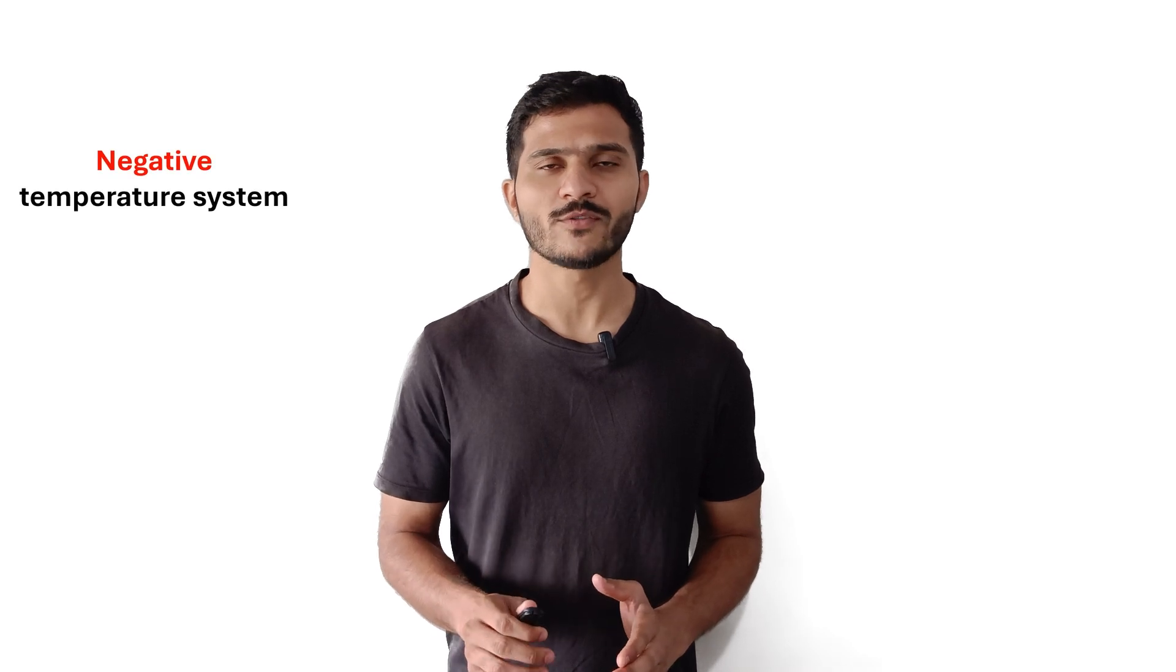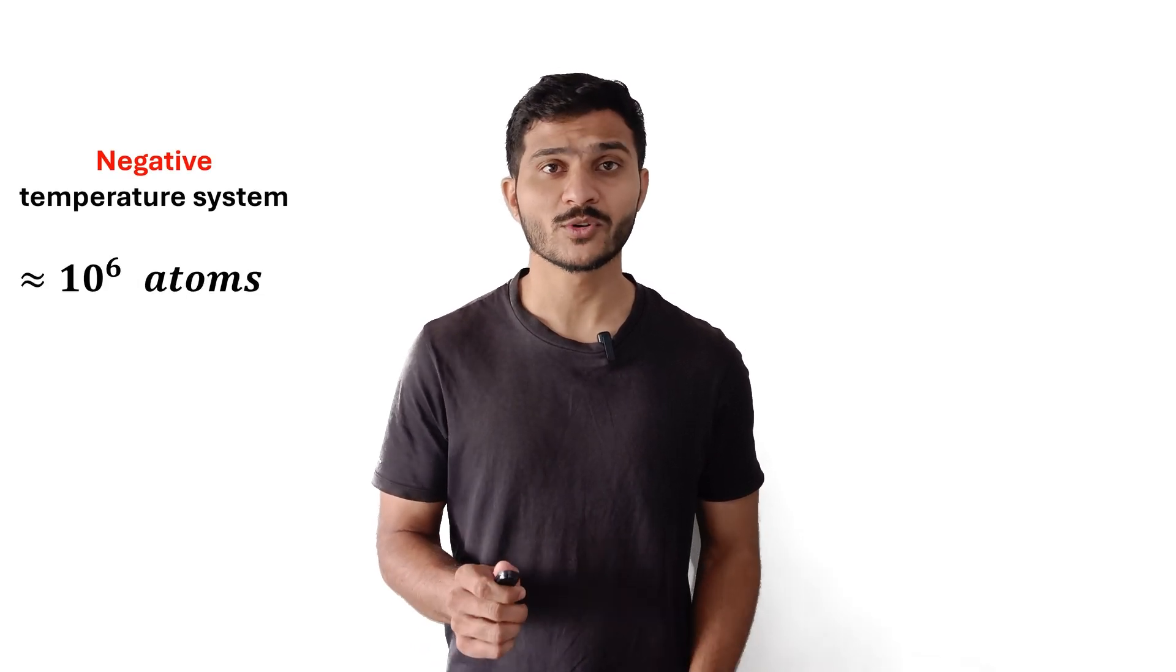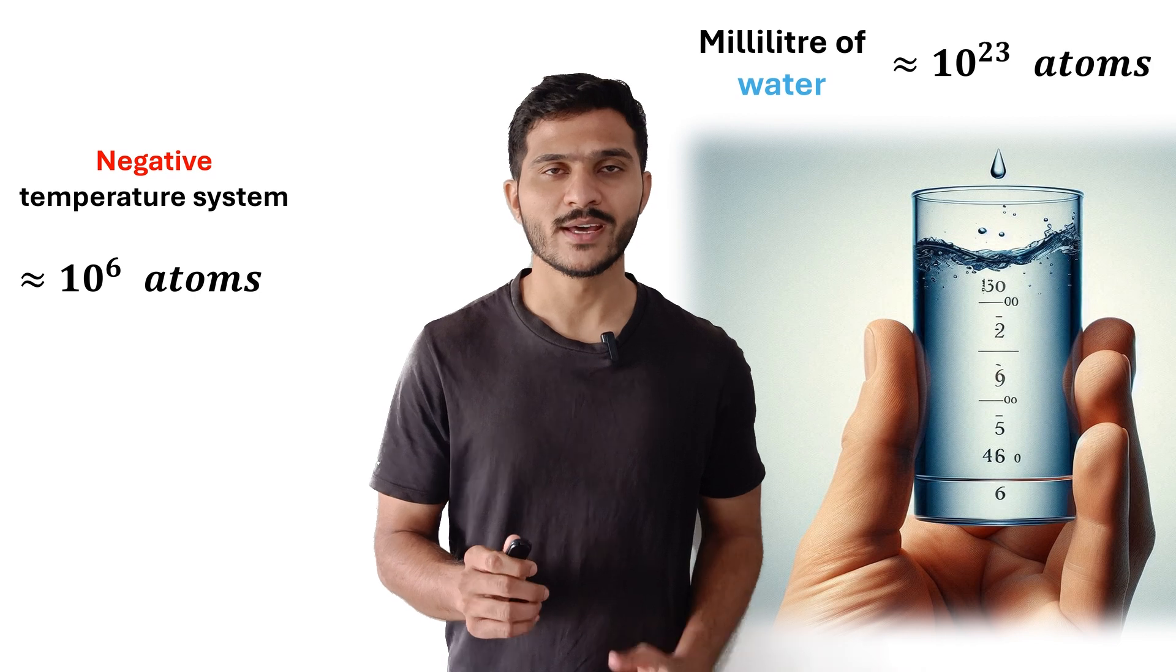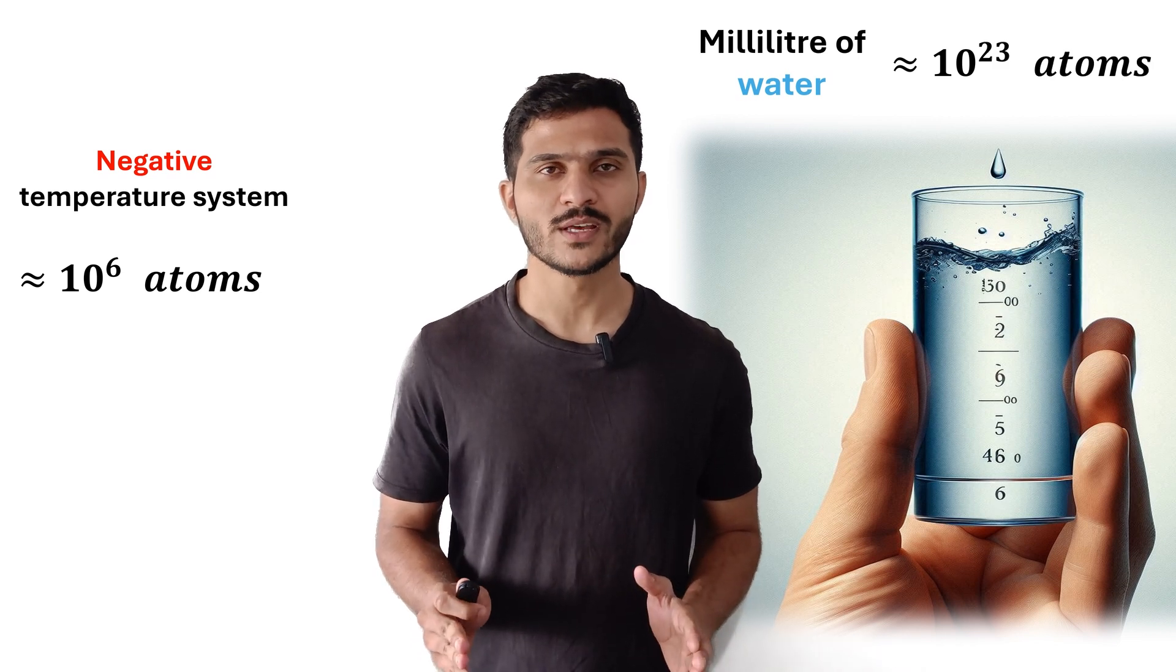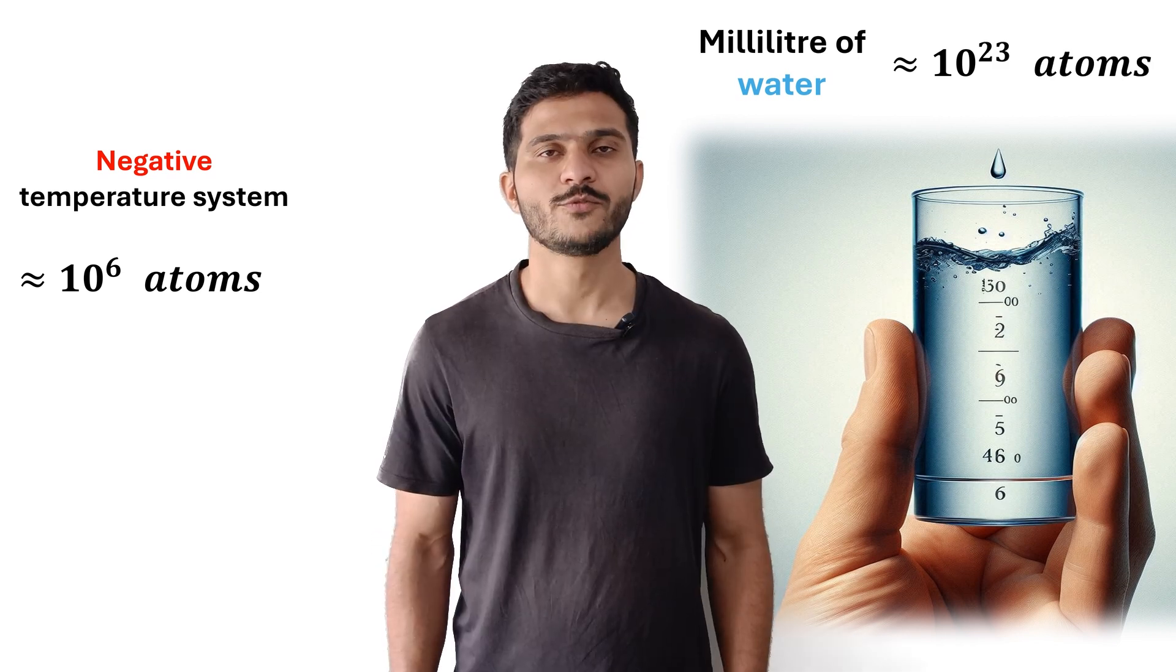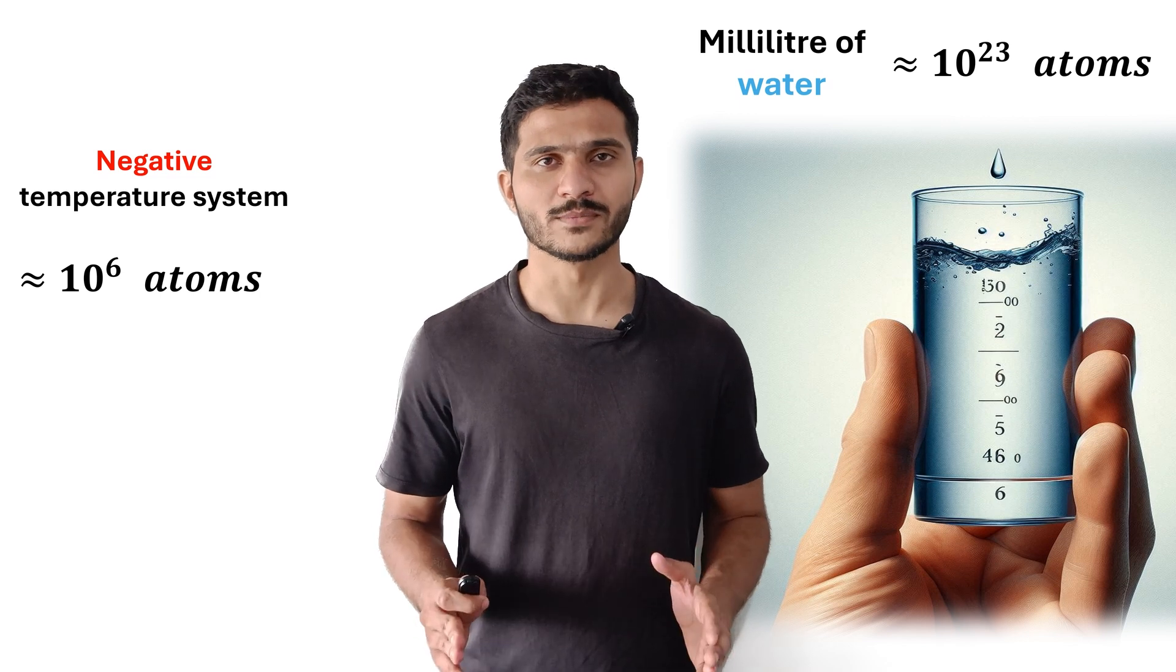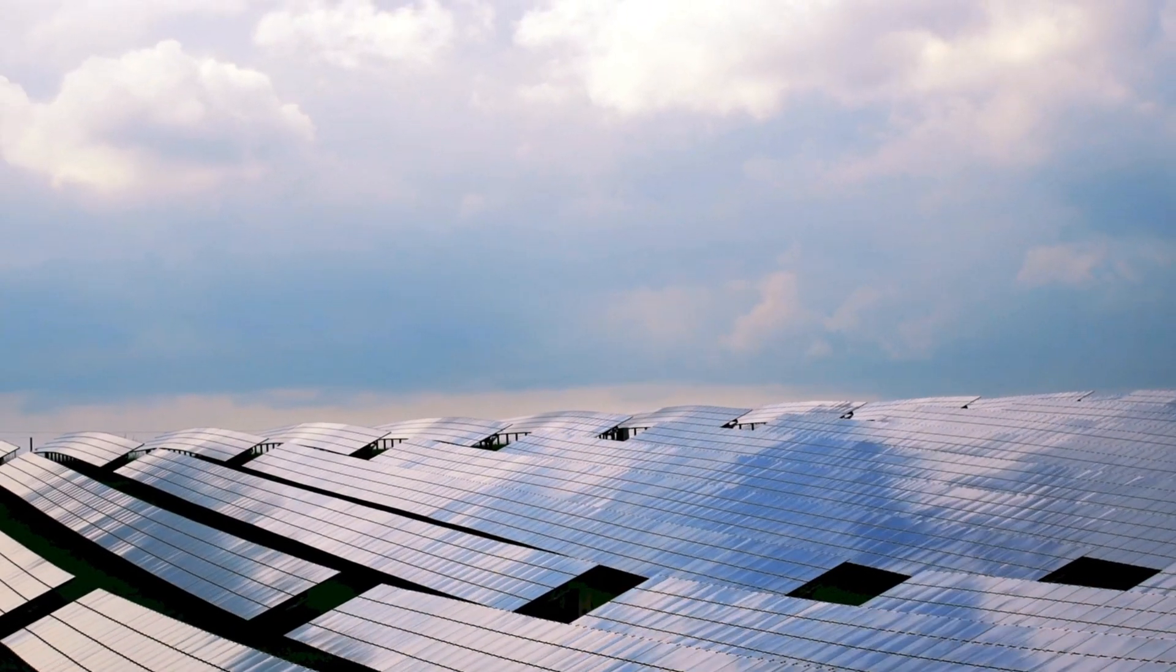Additionally, our system at negative absolute temperature consists only of around 100,000 atoms. That is about 17 orders of magnitude less than the number of water molecules in only a milliliter of water. If you sum up the energies of all our atoms, the energy contained in the system is therefore very little as compared to the energies that we are used to in everyday life.